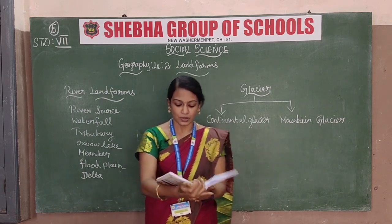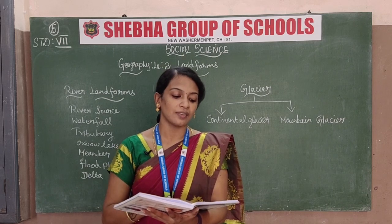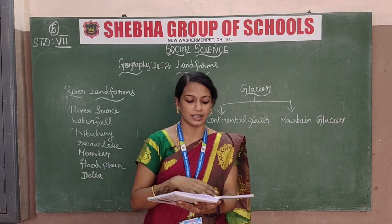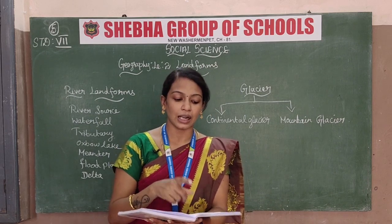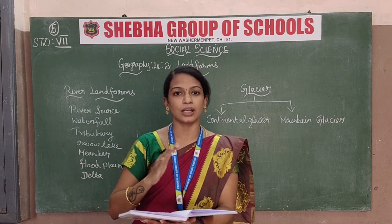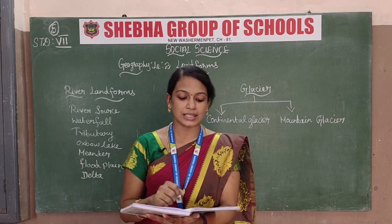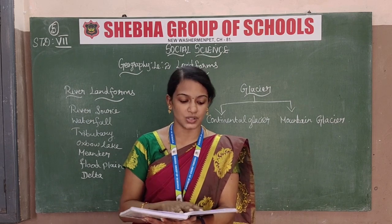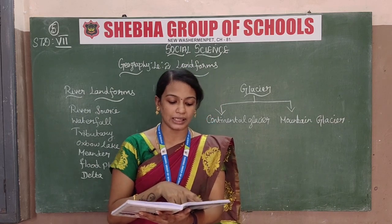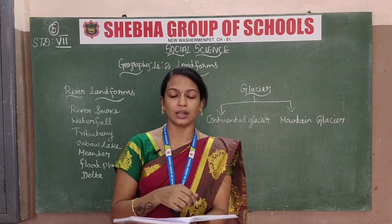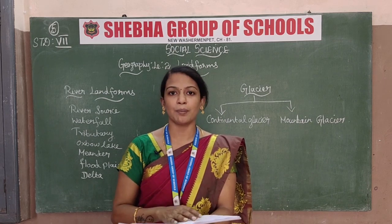The first type is continental glacier and the second one is mountain glacier. So two types of glaciers are there. Continental glaciers cover a vast area of a continent with thick ice sheets. Actually the continental glacier covers a large area of a continent — where the continent is fully covered with ice. That is called a continental glacier. For example, Antarctica is a continental glacier. And the mountain glacier — ice flowing along the valleys in the mountains.